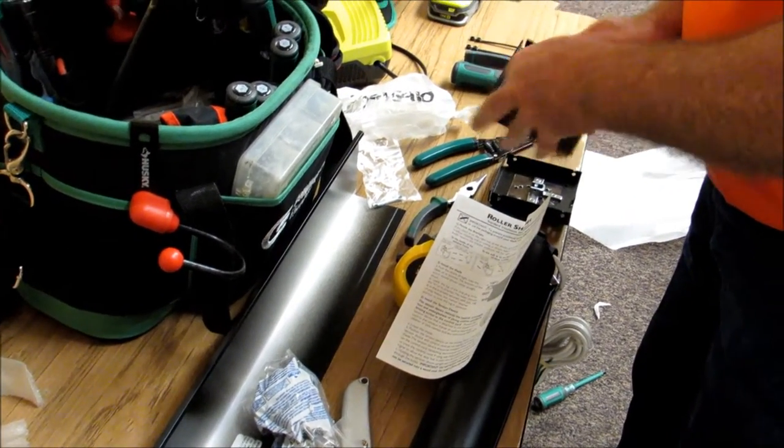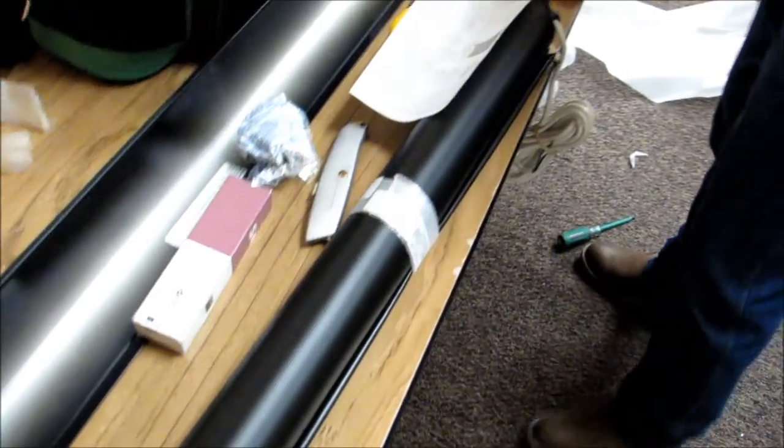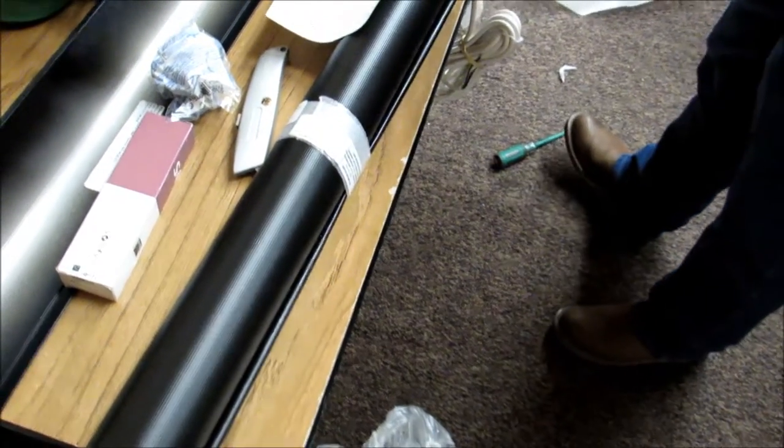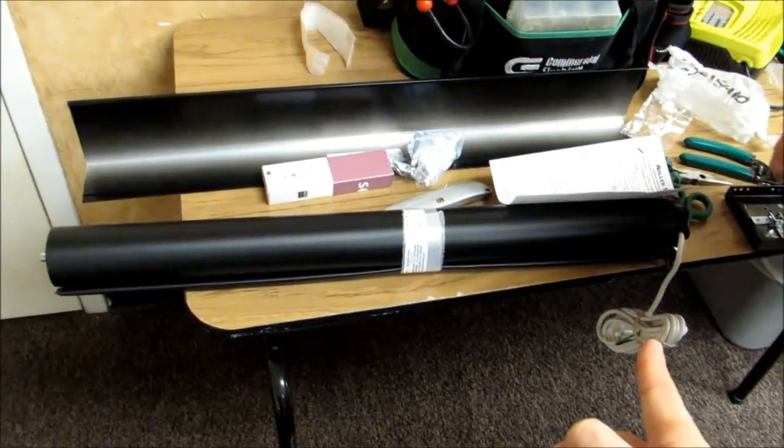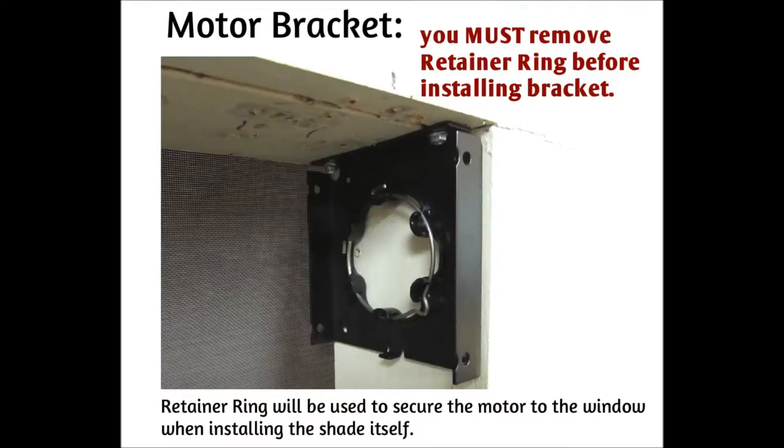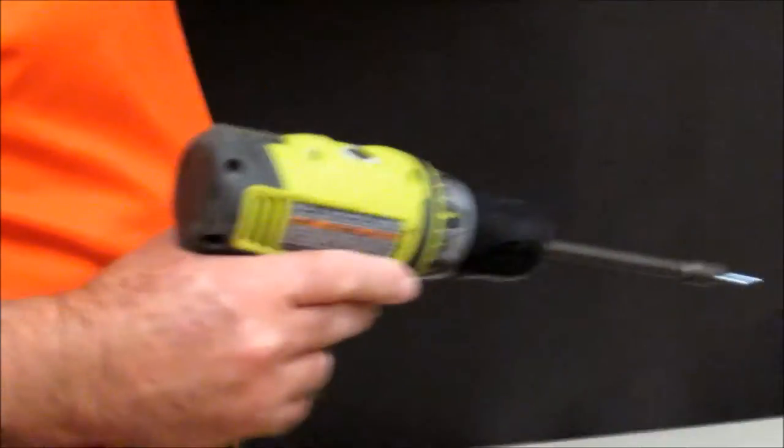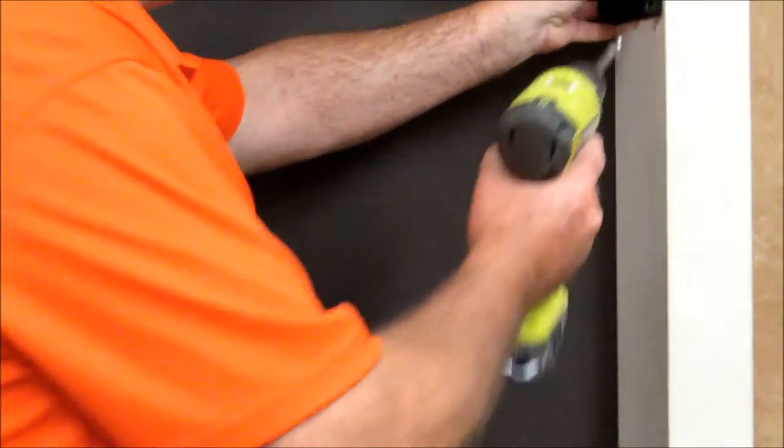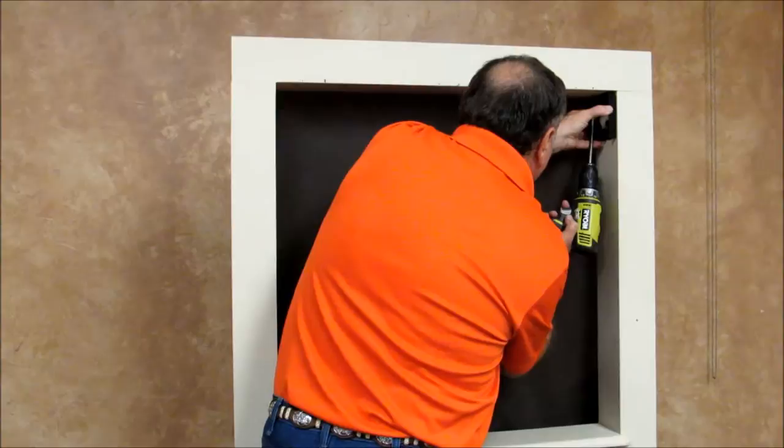Now we remove the retainer ring. Take the screws. I'm just going to set up for a right motor. Take the motor bracket.